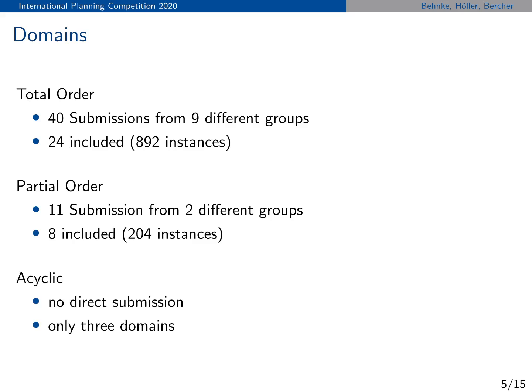We originally planned to also have an acyclic total order track, but we didn't receive any direct domain submissions or planner submissions for that, and in the end we had only three domains to evaluate the planners on, so we decided to cancel this track.